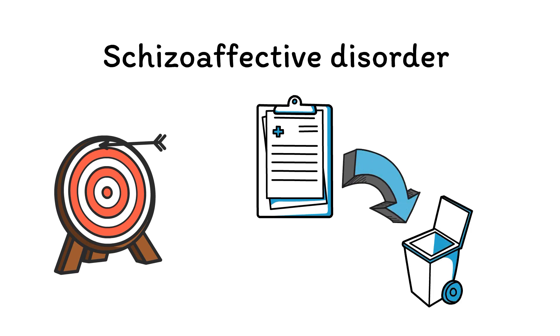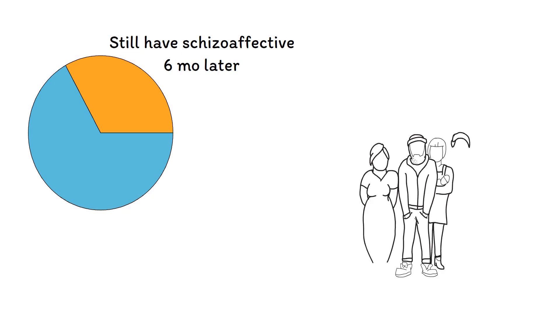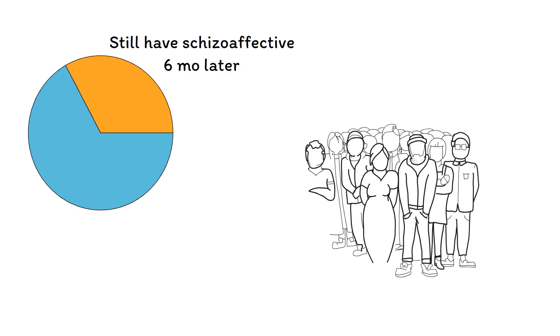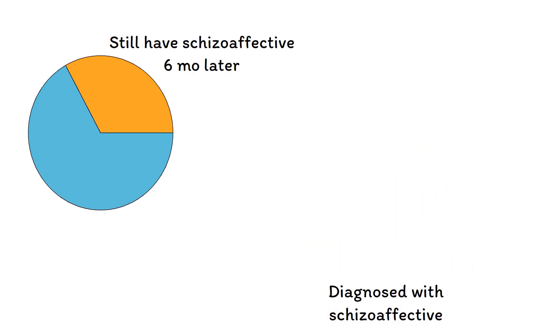And that's not just my experience either. Studies have shown that only one-third of patients diagnosed with schizoaffective disorder during a first hospitalization still have the diagnosis six months later, compared to over 90% for schizophrenia or 80% for bipolar disorder. Another study found that when a group of patients with a diagnosis of schizoaffective disorder were re-evaluated in a systematic way, exactly none of them were found to actually meet criteria for the disorder.